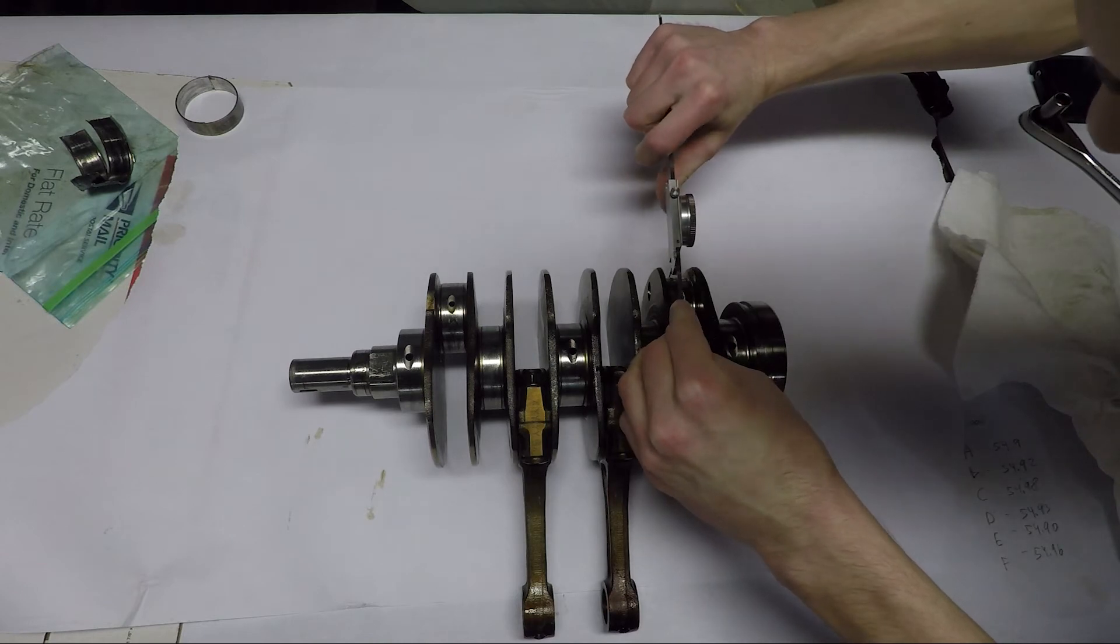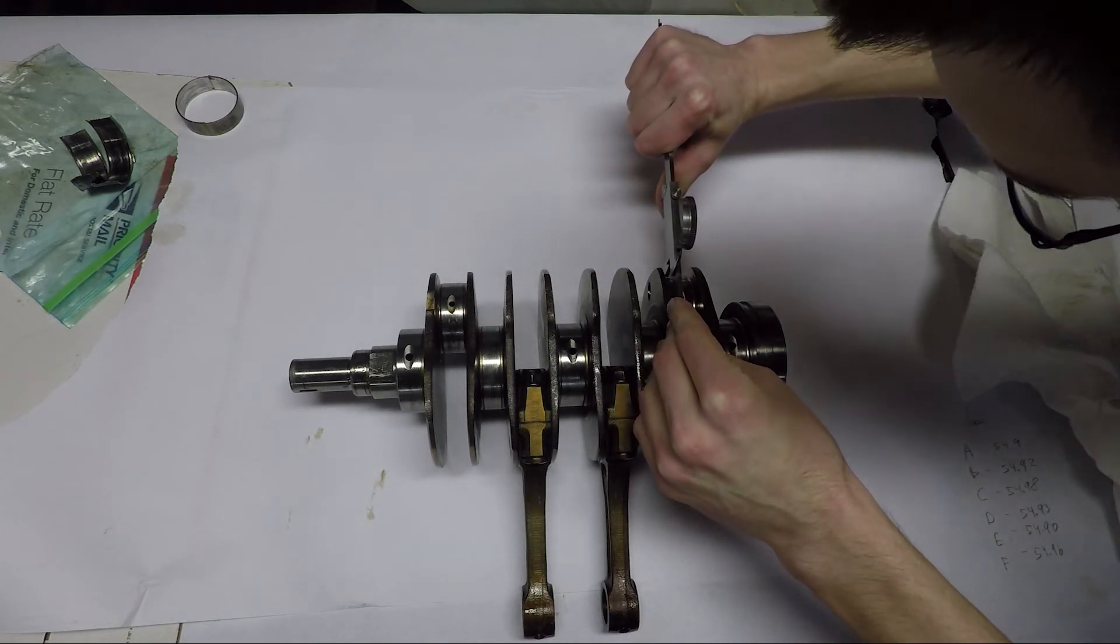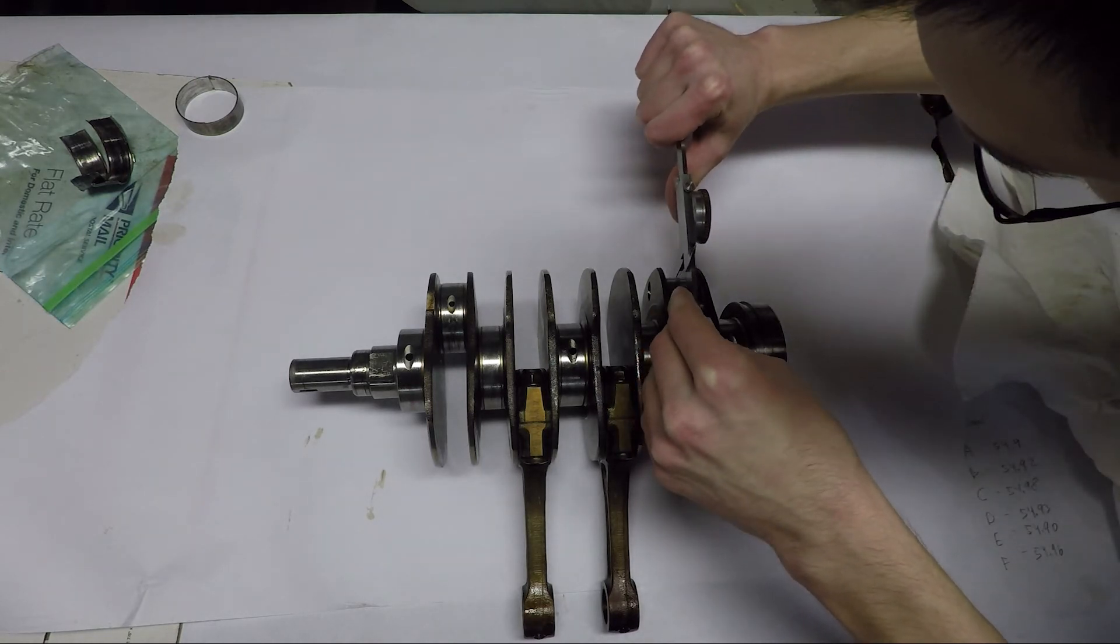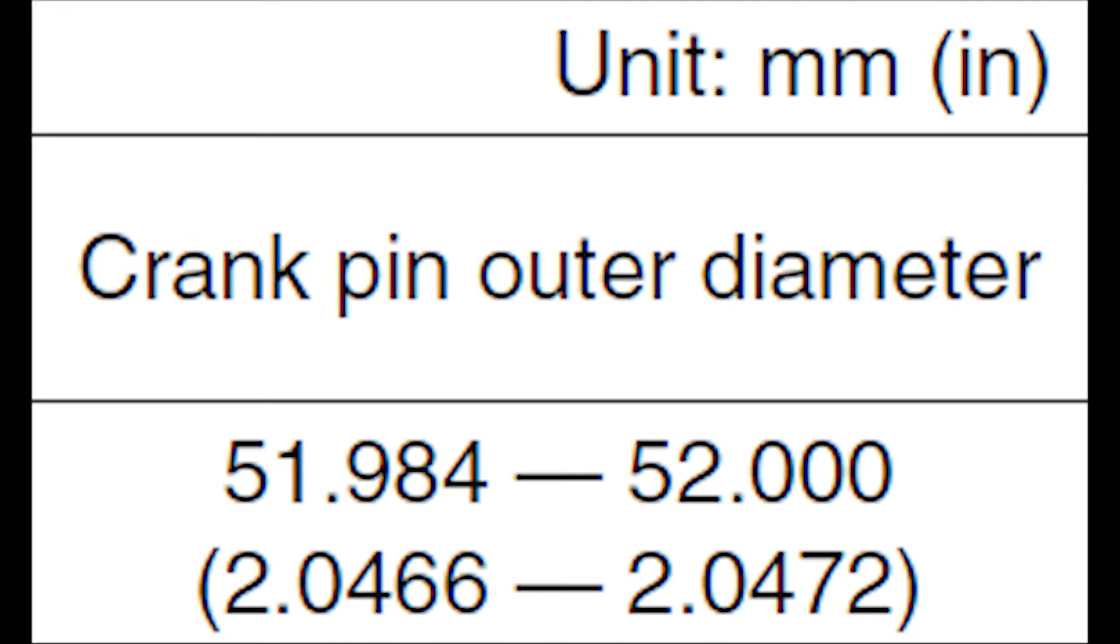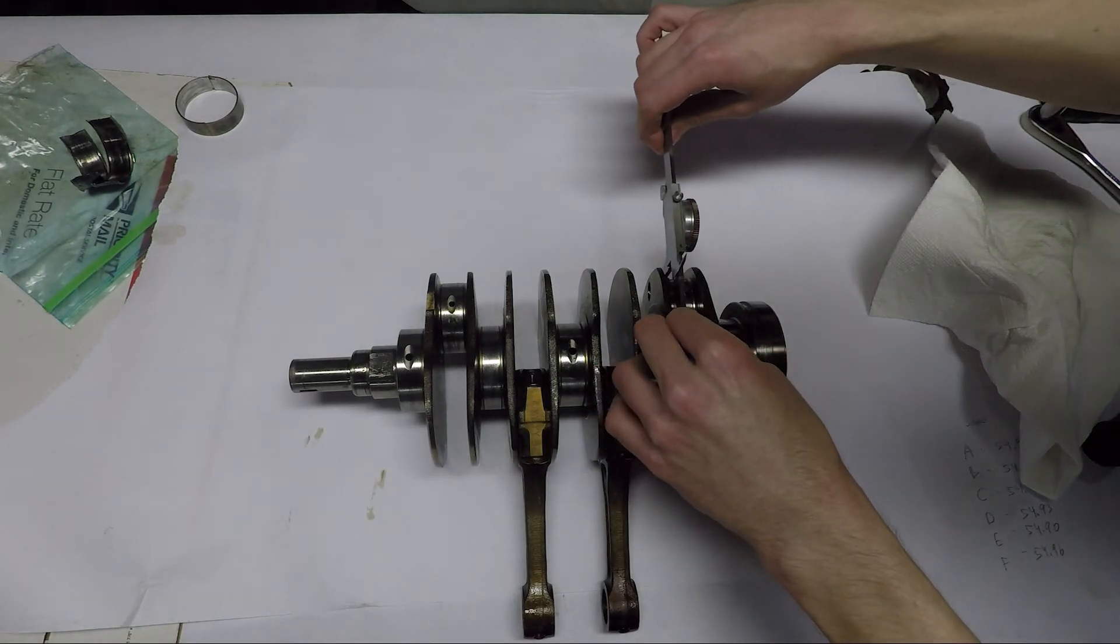The other thing I measured were the crank pins for the number 1 and number 4 connecting rods on the crankshaft. These cranks have 52mm connecting rod journals. Factory specs say they need to be between 51.984 and 52mm. That's a pretty tight tolerance.